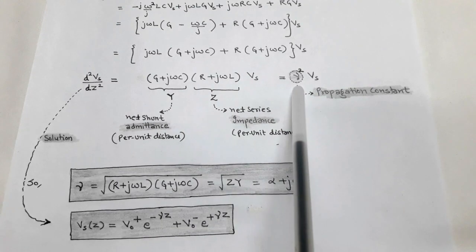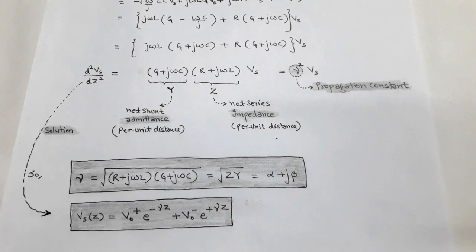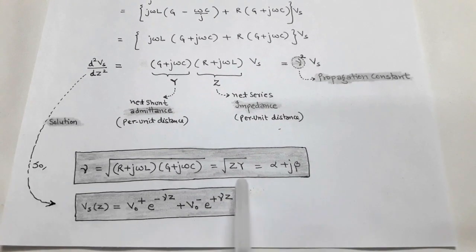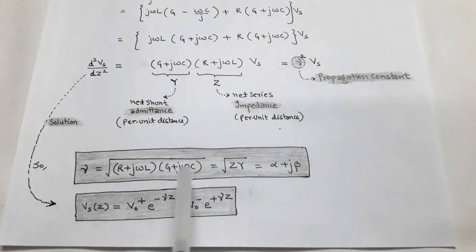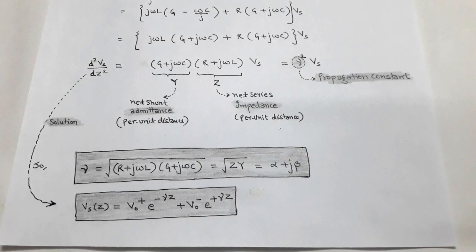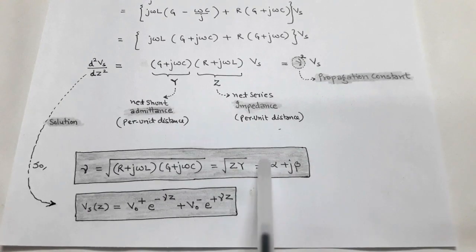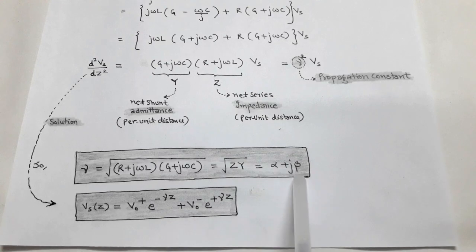The value of γ is the square root of (R + jωL)(G + jωC), which can also be written as √(Z·Y), where Z is the series impedance and Y is the shunt admittance. Since γ is the square root of two complex values, γ is also a complex value and is written as α + jβ, where α is the real part and β is the imaginary part of γ.